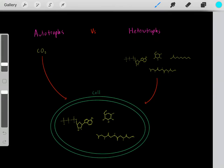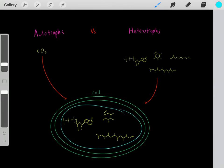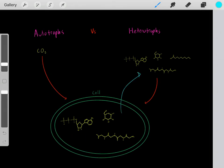So heterotrophs get all of our carbons to create our organic molecules from other organic molecules, from eating other organic molecules.